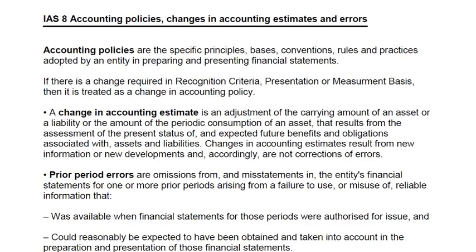Now we are discussing change in accounting policy. For example, if management is currently using first-in-first-out but previously they were using last-in-first-out or average costing, this means we have changed our accounting policy from last-in-first-out to first-in-first-out. This is known as a change in accounting policy.